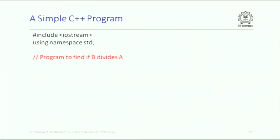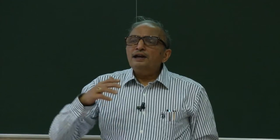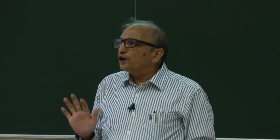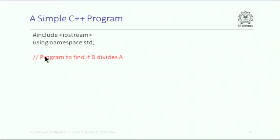Include iostream, using namespace std — we had some discussion on this but it doesn't matter if you do not completely follow this, because this is just minimal required declarations for running a C++ code. This is a comment, and no program should ever be written without appropriate comments — no program, period. It is that important. What does the compiler do with comments? Ignore them.